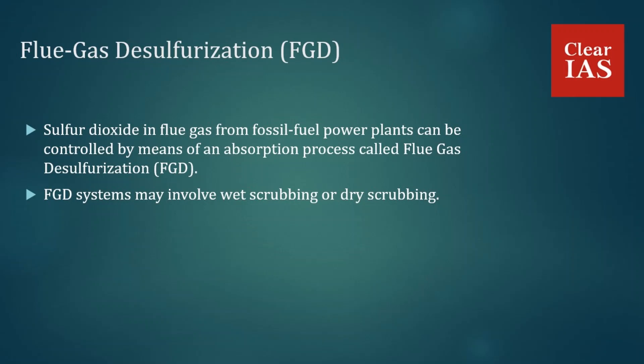Once absorption occurs in dry FGD systems, the solid particles are removed by means of baghouse filters. As per the Greenpeace report, in India there has been an increase of sulfur dioxide emission at already existing hotspots and new sites generating emissions are emerging across the country. The Union Ministry of Environment, Forest and Climate Change first introduced SO2 emission limits for coal-fired power plants in December 2015. However, a Supreme Court order changed the deadline for installation of FGD technology from 2017 to December 2019 for Delhi NCR, and till 2022 for other parts of the country. Environment experts have called for strict action as it is not clear whether power plants will meet even the extended deadlines.